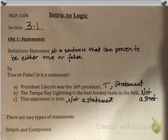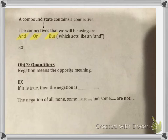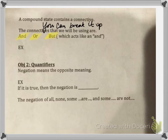There are two types of statements: simple and compound. A simple statement will not contain a connective. A compound statement contains a connective. The connectives are the words 'and,' 'or,' or 'but' — and 'but' acts like 'and,' we'll need that later. A compound statement with a connective can be broken up into two or more simple statements.